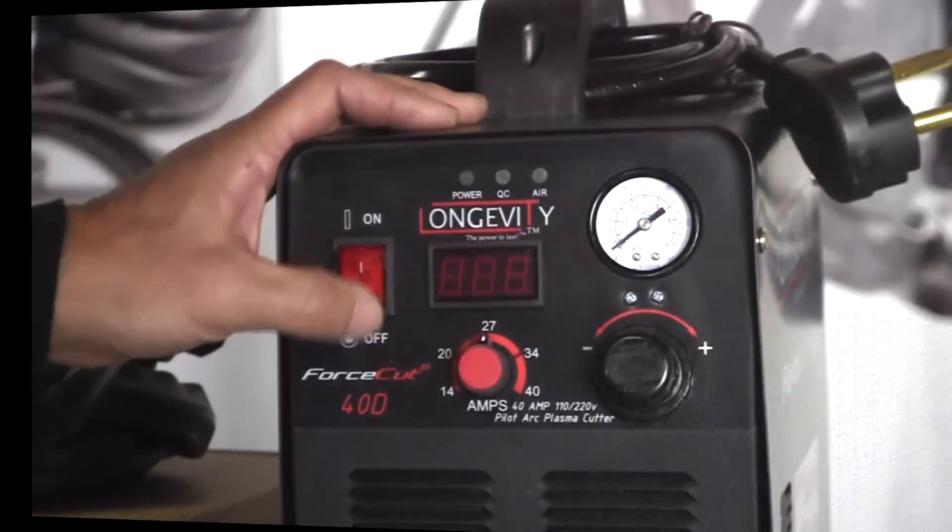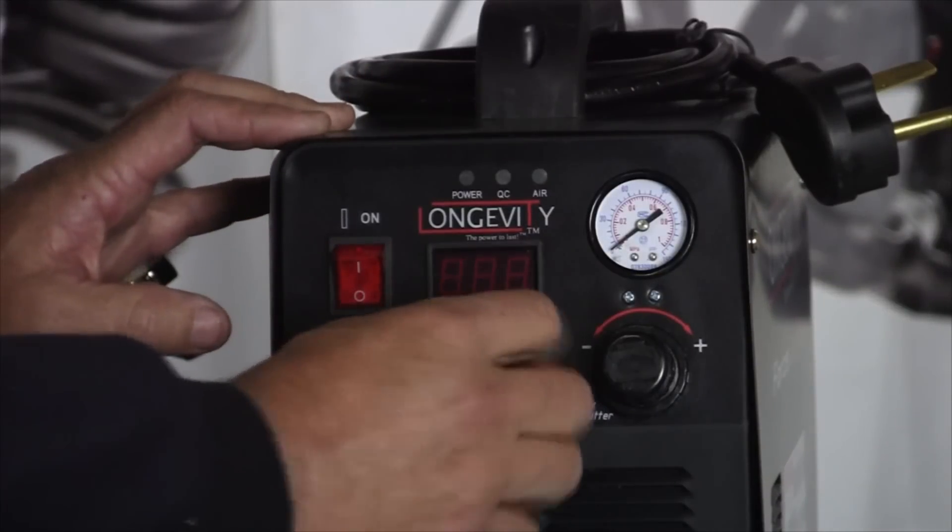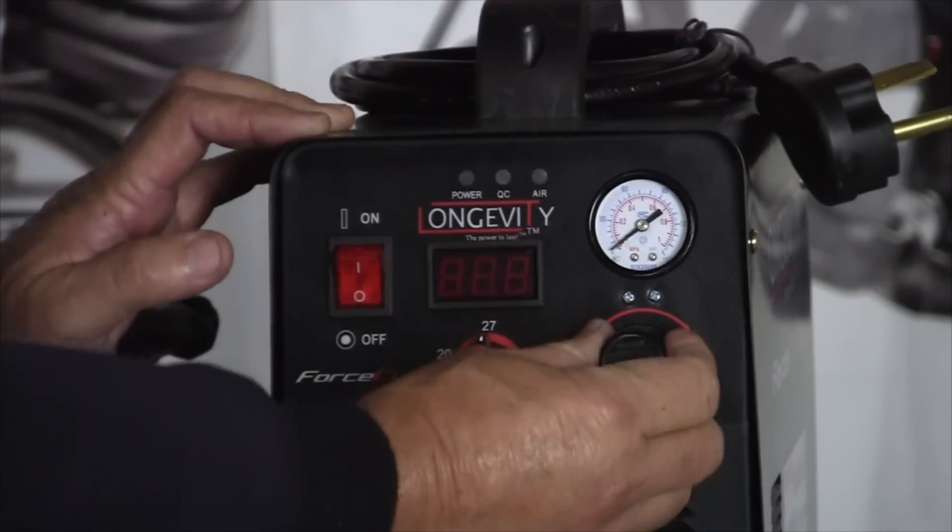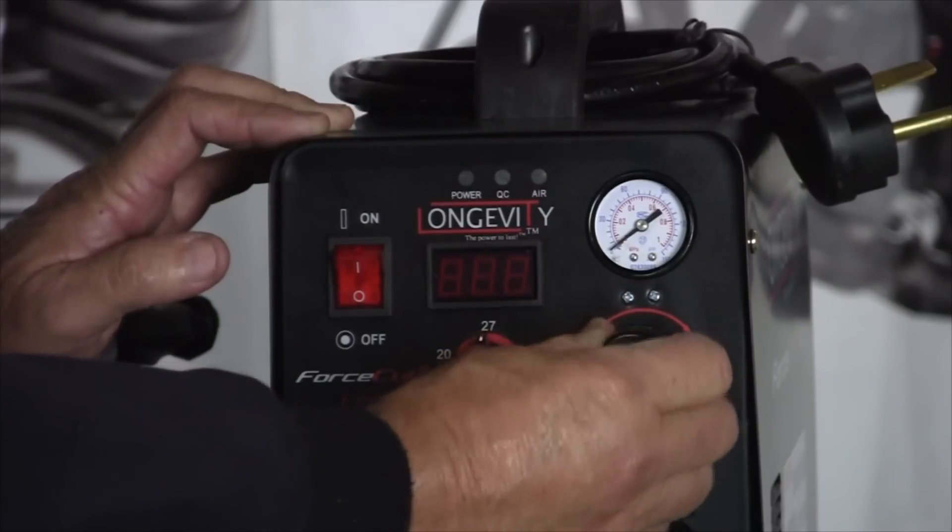Our on off switch. Here's our amperage control with a digital readout. And this is our PSI or air flow control. It's regulated through this knob up and down.